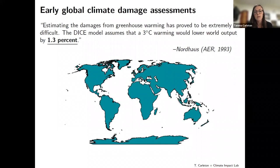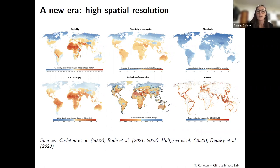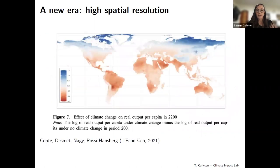Early global climate damage assessments were very influential but gave us estimates like: 3 degrees of warming is associated with losses globally of about 1.3% — one aggregate number across sectors and locations. Where the frontier is moving now is much higher spatial resolution, allowing us to really dig into inequality. These are six examples from work at the Climate Impact Lab measuring climate damages for about 25,000 different regions around the world.